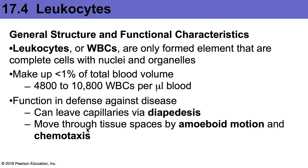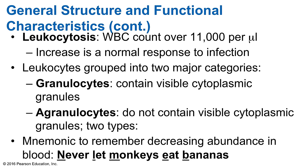White blood cells are able to leave the blood capillaries by a process called diapedesis. Once they leave the blood vessel and enter the tissue, they form flowing cytoplasmic extensions that move them along — this is called amoeboid motion. They can pinpoint areas of infection and damaged tissue by following chemical trails released by other white blood cells or damaged tissue, a phenomenon known as positive chemotaxis. Leukocytosis refers to a WBC count over 11,000 cells per microliter, a normal immune response to pathogens.